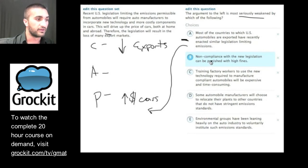Let's take a look at B. Non-compliance with the new legislation can be punished with high fines. So if in addition to the fact that the price of cars will go up, you can be punished with high fines, will that decrease export? Not sure how it fits in. Sounds like an FYI. How about C? Training factory workers to use the new technology required to manufacture compliant automobiles will be expensive and time-consuming. This is just adding to the point that they already made that the price of cars manufacturing will increase. So that doesn't seem to weaken the argument if we added it here.